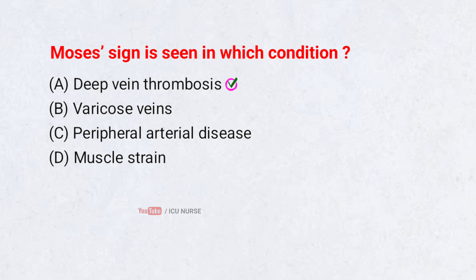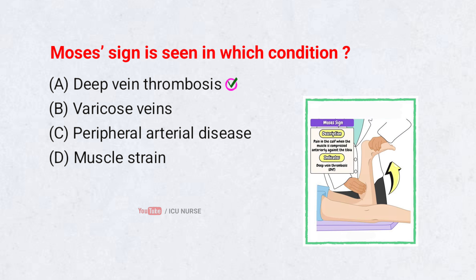Deep vein thrombosis. Moses' sign is positive when squeezing the calf from front to back causes pain, while side-to-side compression does not. This finding suggests inflammation of the deep veins, commonly seen in deep vein thrombosis.